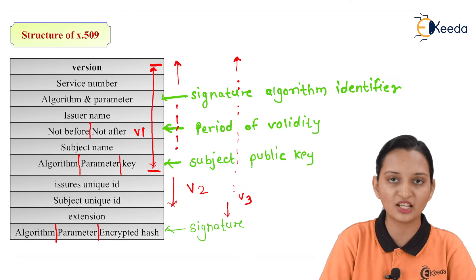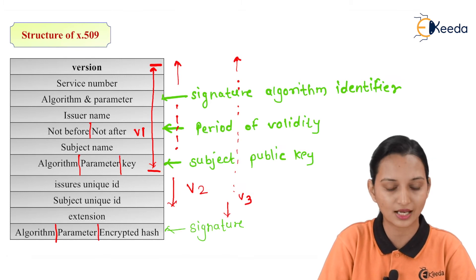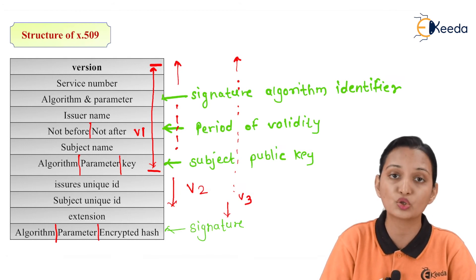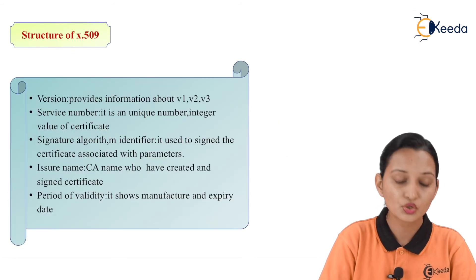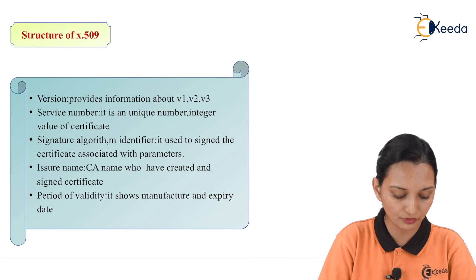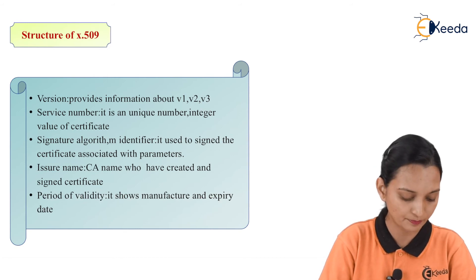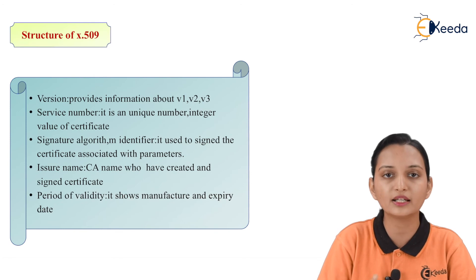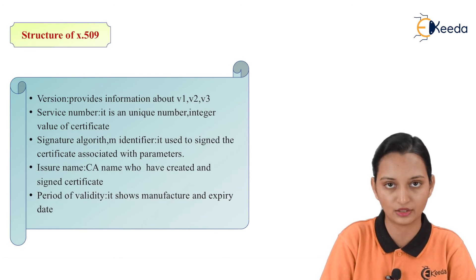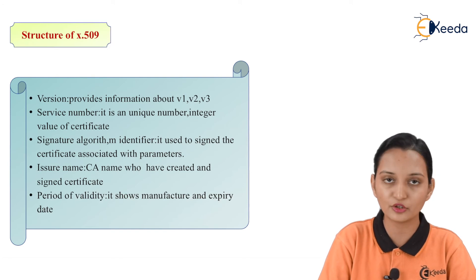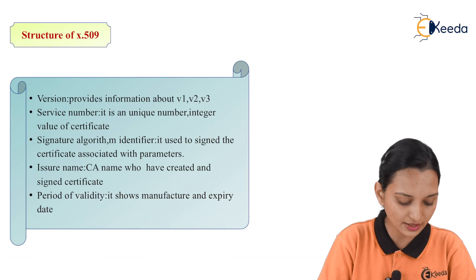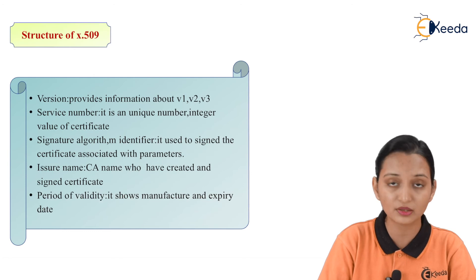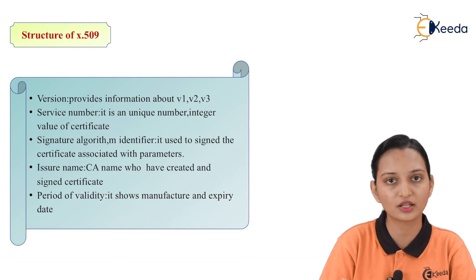Now we will try to understand the meaning of each and every block, so that you can understand how one is able to fill up all these blocks to verify identity or prove their identity. Version provides information about V1, V2, or V3. Second is serial number — it is a unique identity number represented as an integer value of the certificate. Third one is signature algorithm identifier: it is used to sign the certificate associated with parameters, and only the authorized user is able to sign.